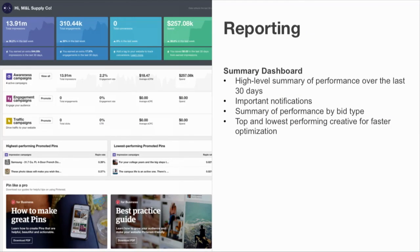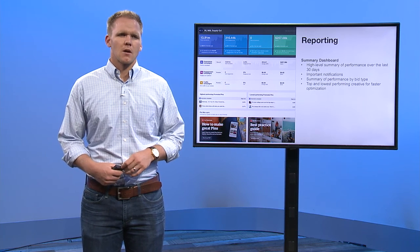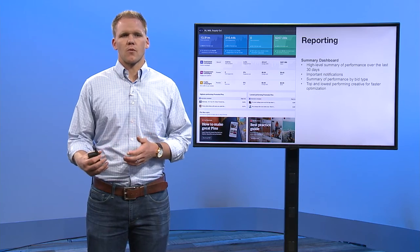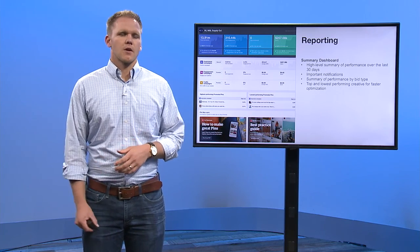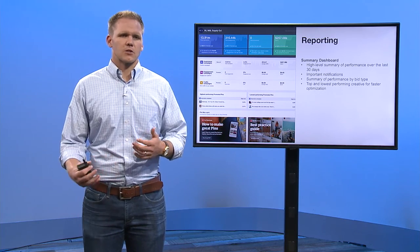When you first log in to Pinterest Ad Manager, you'll land on a summary dashboard. The summary dashboard provides a high level summary of performance over the last 30 days, along with important notifications about things like campaigns ending soon, and a summary of performance by bid type — be it CPM, CPE, or CPC — along with your top and lowest performing pins, or creative, to help with faster optimization.